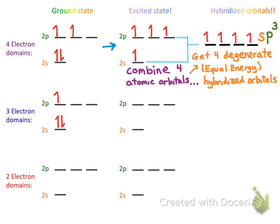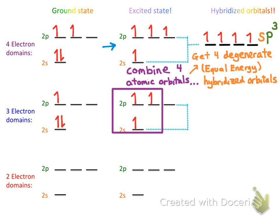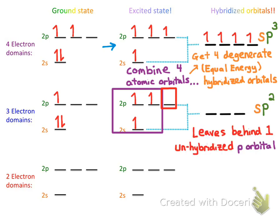The idea with three electron domains is pretty similar, except this time we only have three electrons to worry about. We excite each electron into its own orbital, then take those three orbitals and combine them together, creating three hybridized sp2 orbitals — a wildly original name. Notice that we left one p orbital outside of the mix. This one unhybridized p orbital will become very important with double bonds and delocalized electrons.